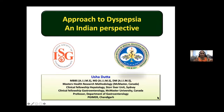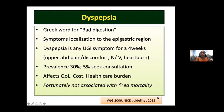I'll now get along with the topic: approach to dyspepsia, kept as an Indian perspective for our Indian audience. Dyspepsia is a Greek word for 'bad digestion.' Symptoms localized to the epigastric region are considered as dyspepsia. Any patient presenting with symptoms for more than four weeks in the form of upper abdominal pain, discomfort, nausea, vomiting, or heartburn is considered to have dyspepsia. The worldwide prevalence is as high as 30 percent and five percent of those seek consultations.